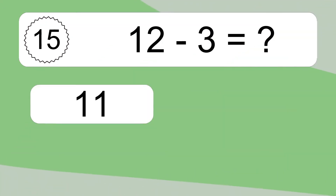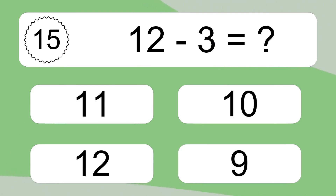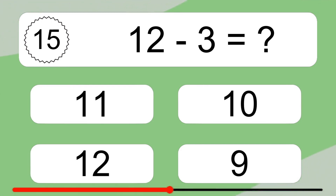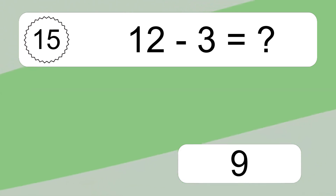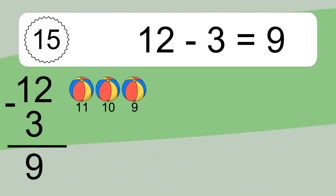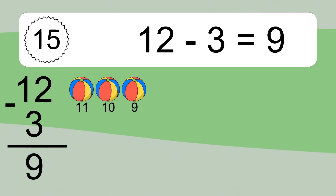12 minus 3 equals what? 12 minus 3 equals 9. Let's count it. 11, 10, 9.